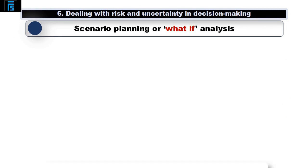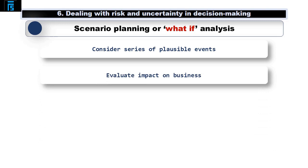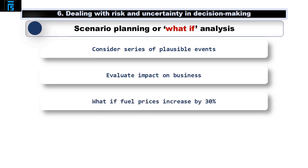Often organisations will consider a series of plausible future events, to map out how they might affect the business, and how the business could plan in advance to respond. For example, an airline might consider, what happens if fuel prices increase by 30%.